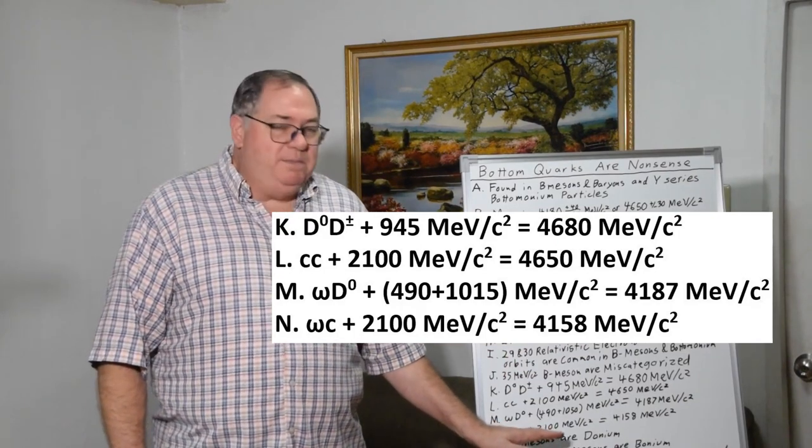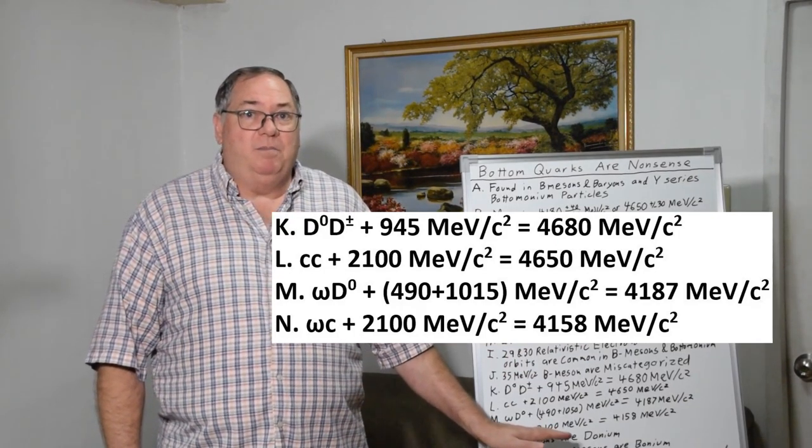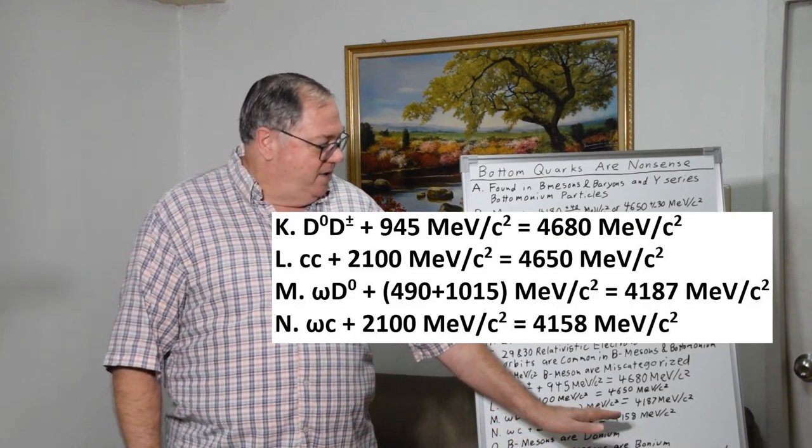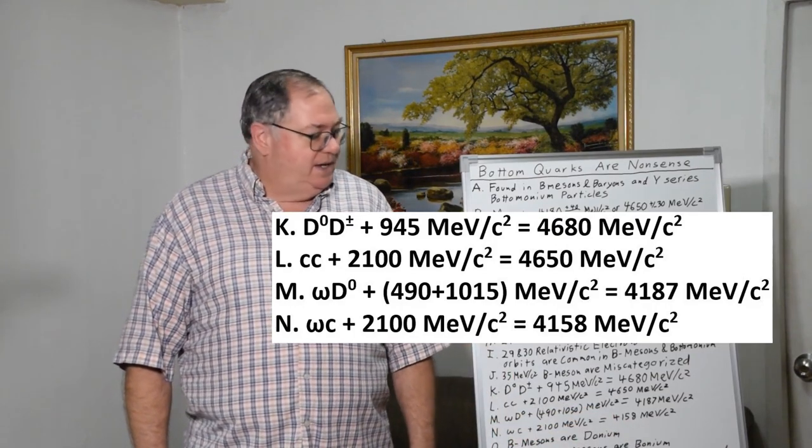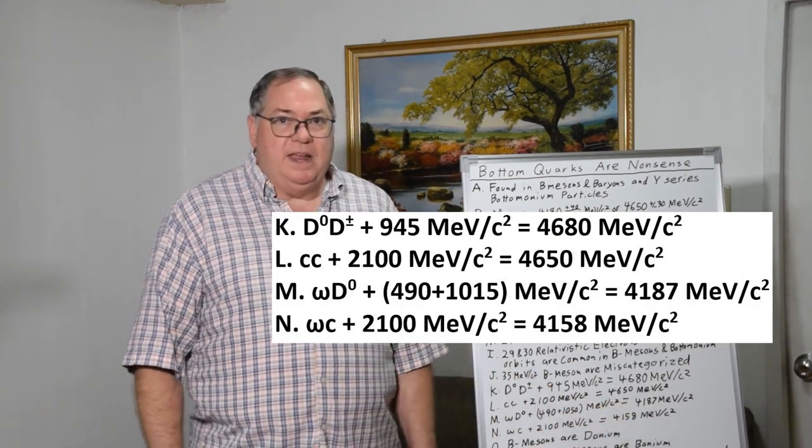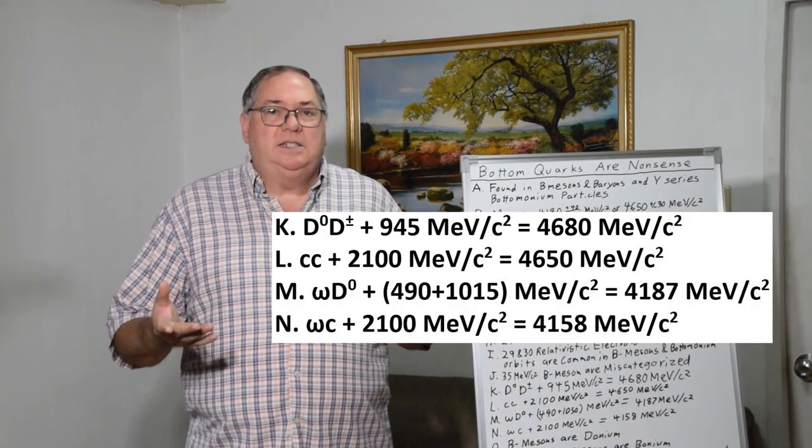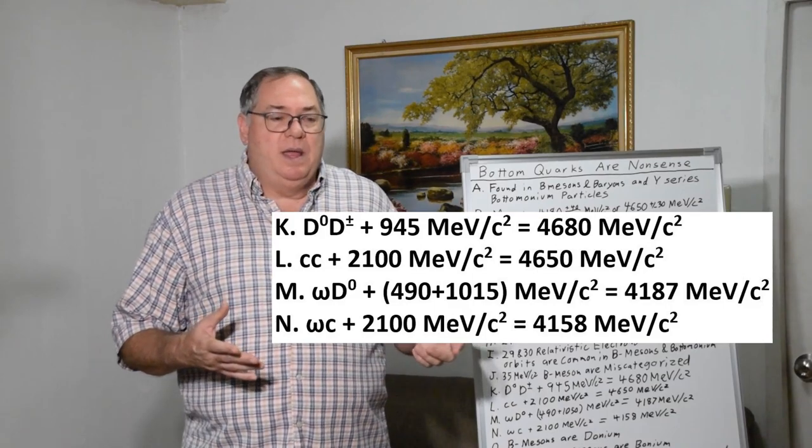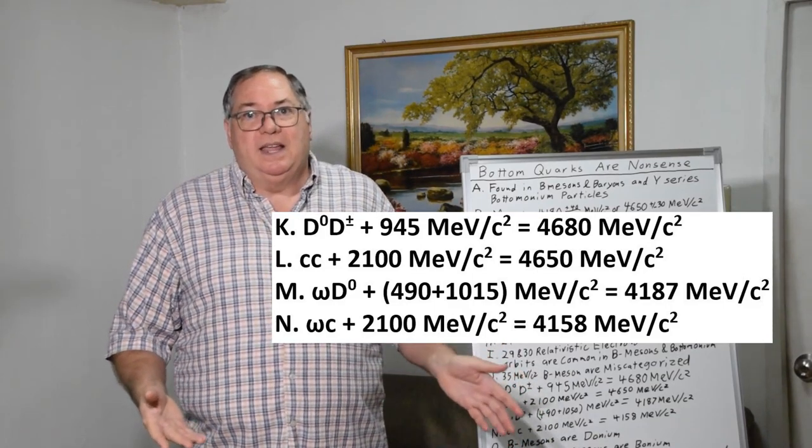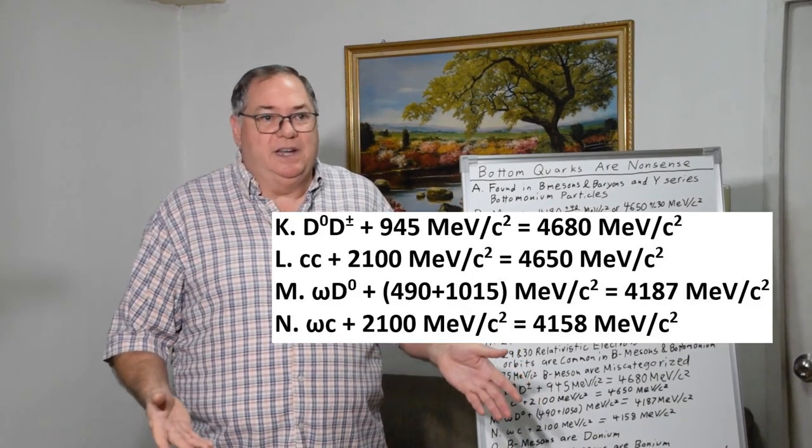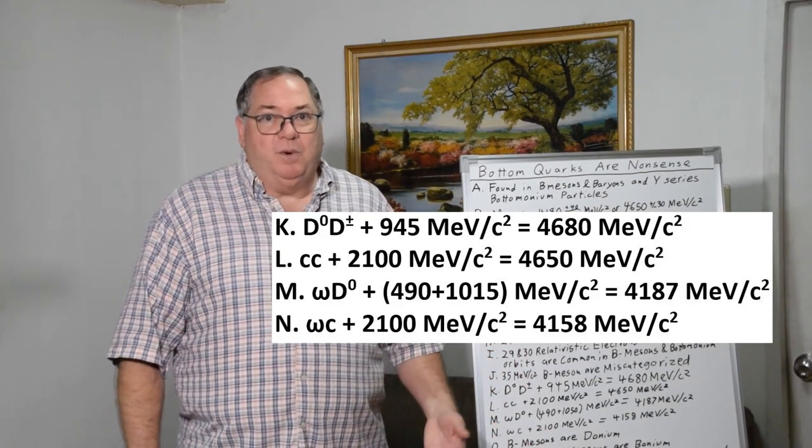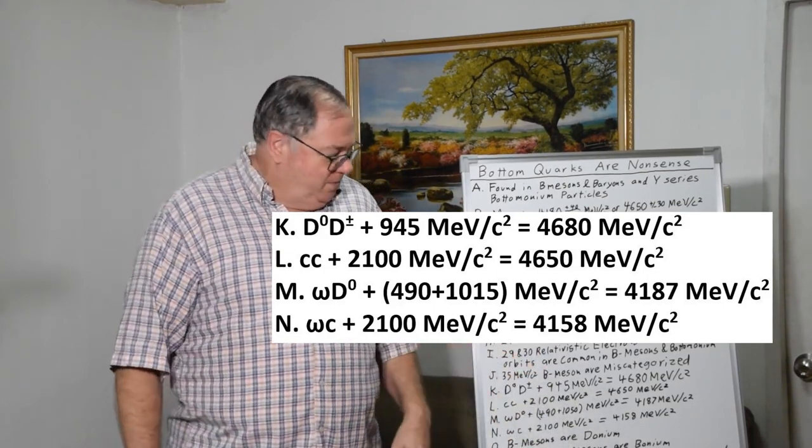Or even more simply, you can get an omega and a charm plus 2100 MeV and you get 4157, 4158. So you end up with estimates in that range by looking at, again, two charm quarks essentially. Two charm quarks equals a bottom quark.